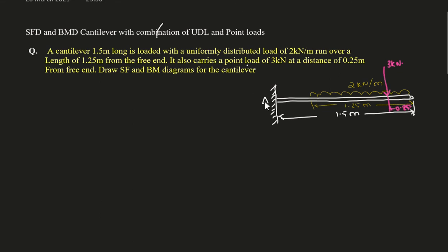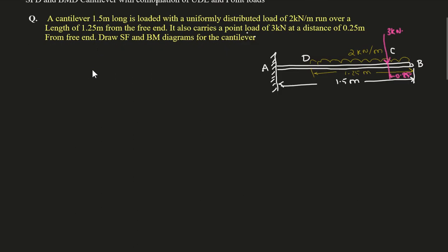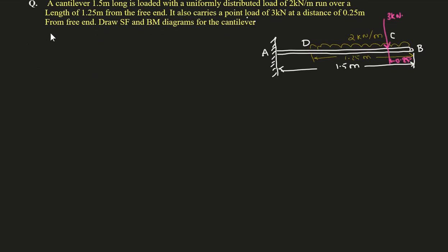Now we need to draw the shear force and bending moment diagrams, so let us calculate their values. Coming from right to left — shear force at B is 0, since the UDL has started but there is no resultant magnitude there. Up to C we have UDL, and at C we have a point load acting. Let us calculate for the UDL first.